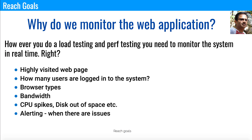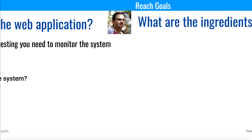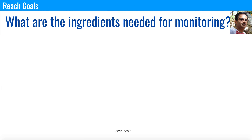We also need to set up a right alerting mechanism where if any of the issues are happening in the system, it has to be alerted to the production support team so that they can take the necessary action to make sure the system is running smoothly. There are a lot of reasons to monitor the system. Now let's see what are the real ingredients needed for monitoring.